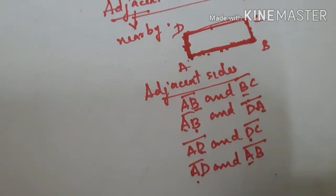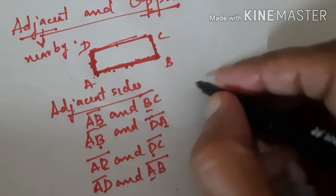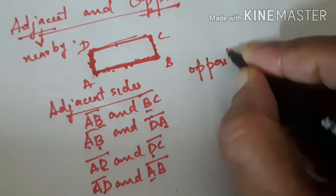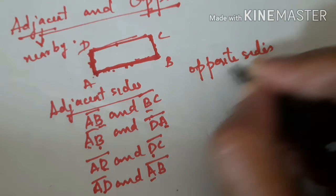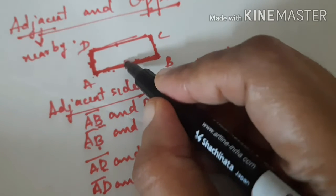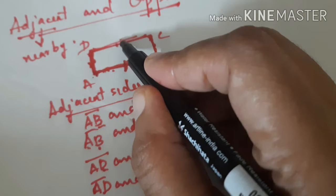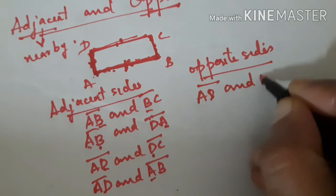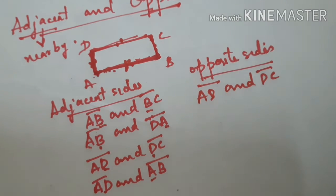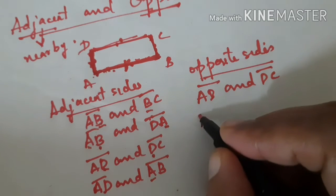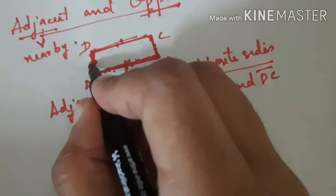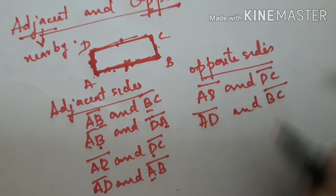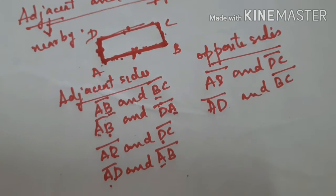Opposite sides are easy to find. AB and DC are opposite sides, and AD and BC are the other pair of opposite sides.